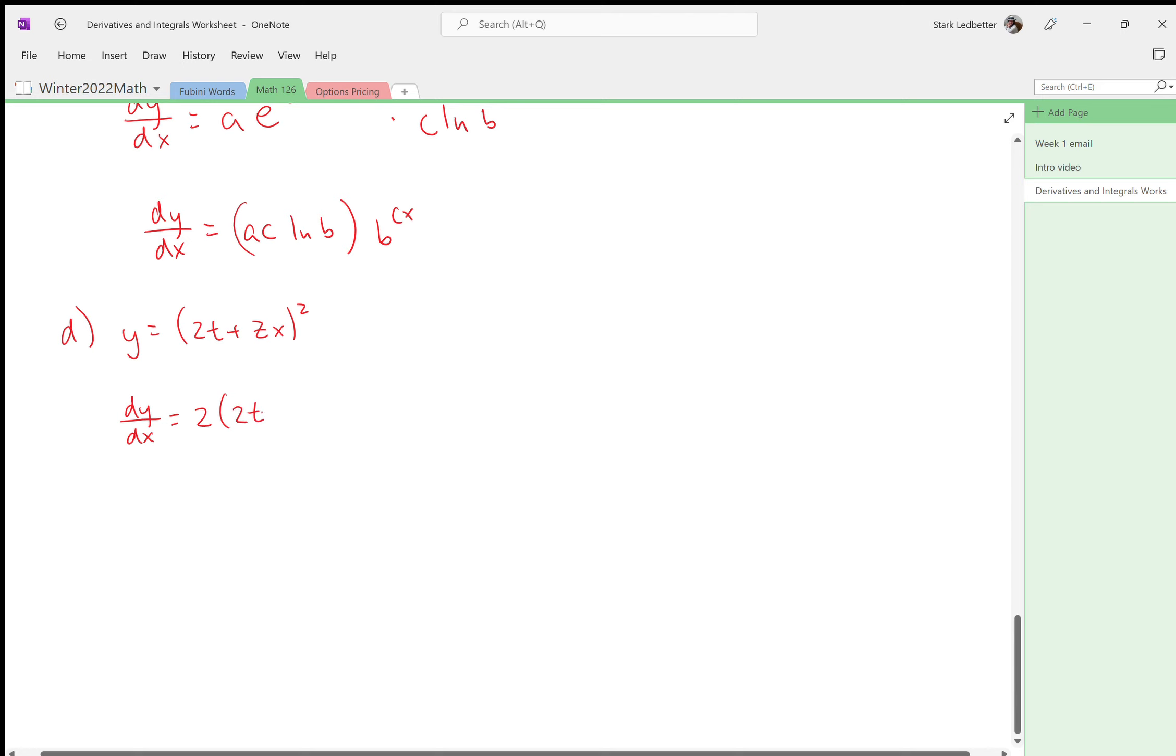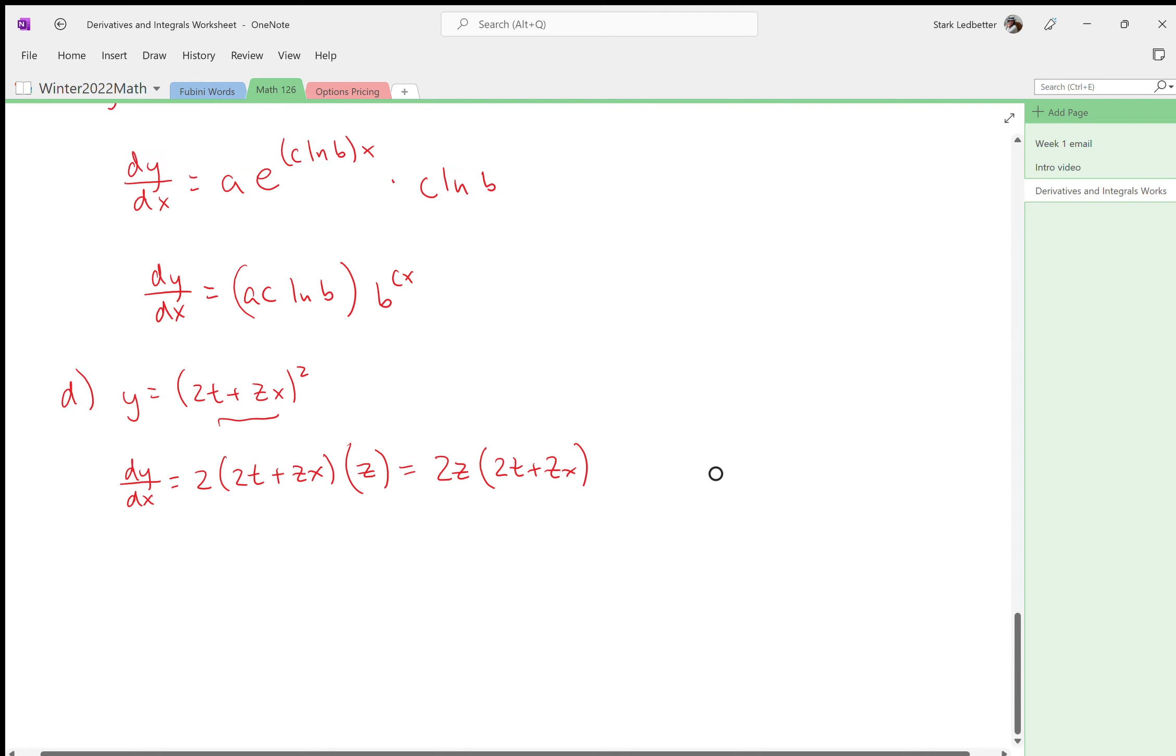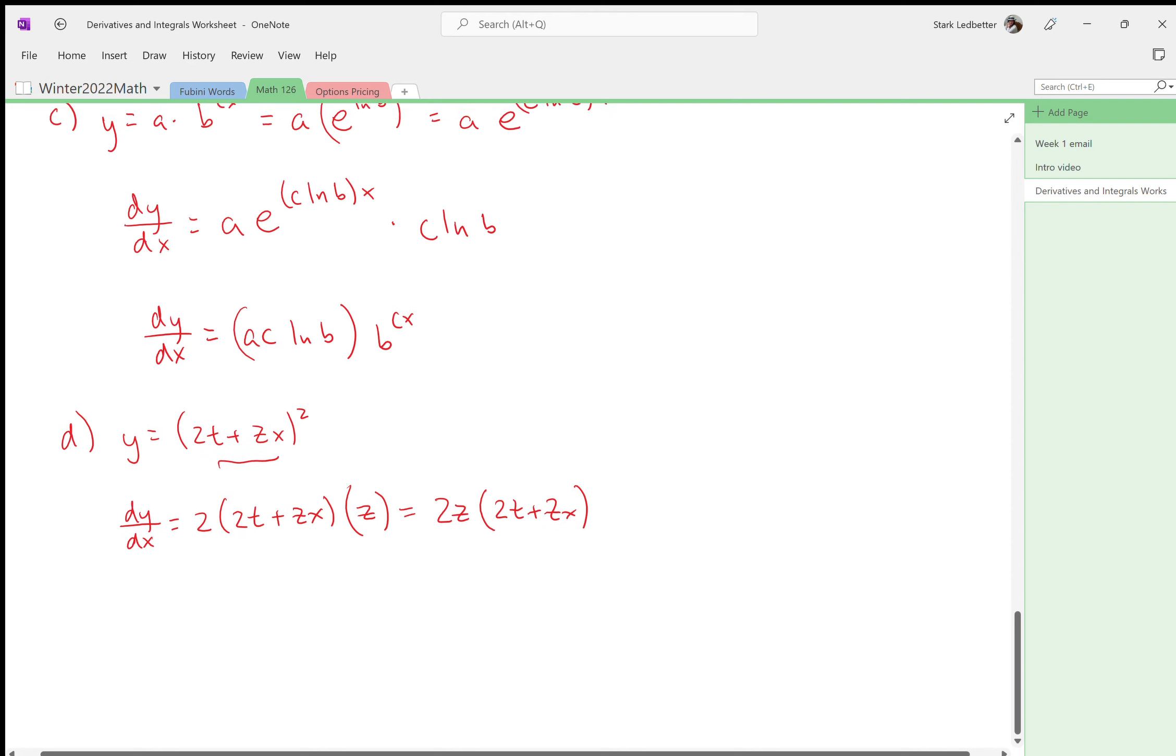We're taking a derivative using the chain rule, so 2 comes down in front, and then taking derivative of the inside, 2t is a constant so it goes away, so I'm just left with z. So again, this last step isn't necessary, but it is kind of nice if you simplify it that way. Alright, that is all of problem two. Hopefully that wasn't so bad. I'll have more videos for the next problems.